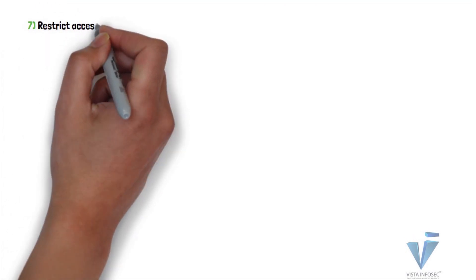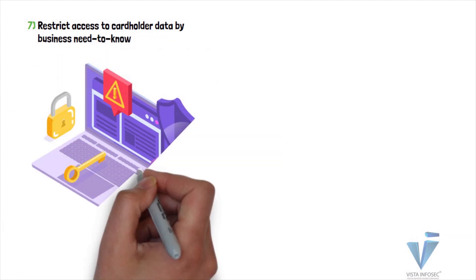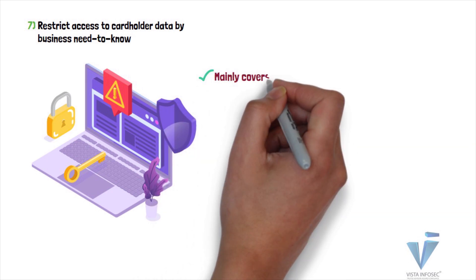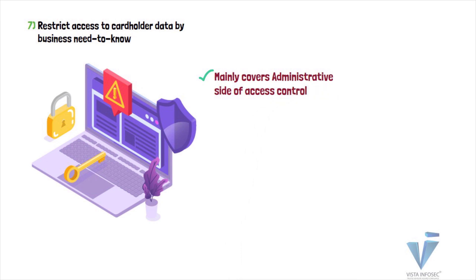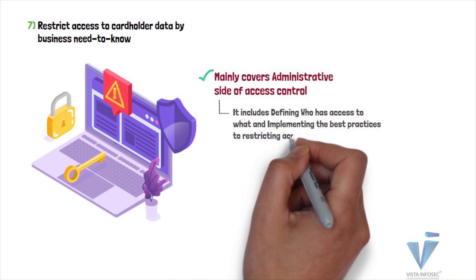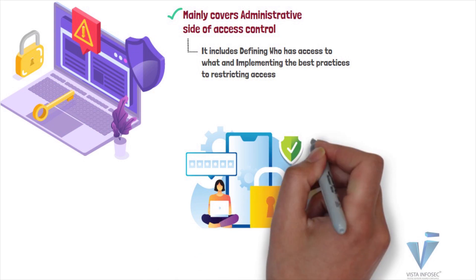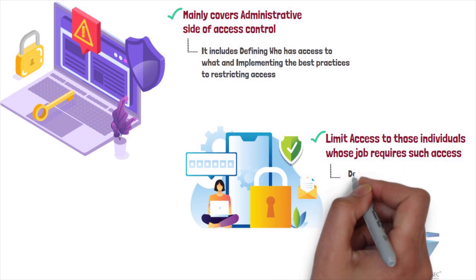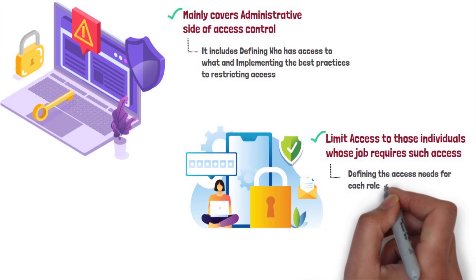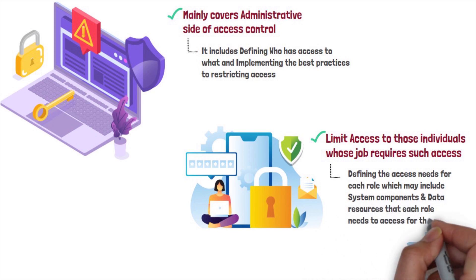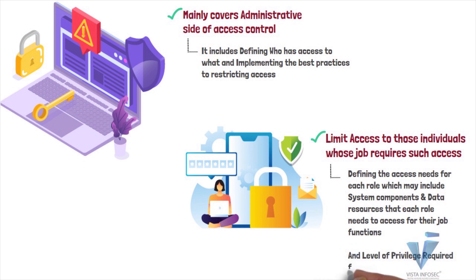PCI DSS Requirement 7, which is to restrict access to cardholder data by business need to know, speaks about implementing strong access control measures in the cardholder data environment where the sensitive card data is stored. The requirement mainly covers the administrative side of access control, including defining who has access to what and implementing the best practices for restricting access. The requirement needs an organization to limit access to system components and cardholder data to only those individuals whose job requires such access, including defining the access needs for each role.